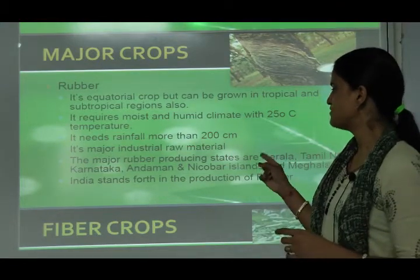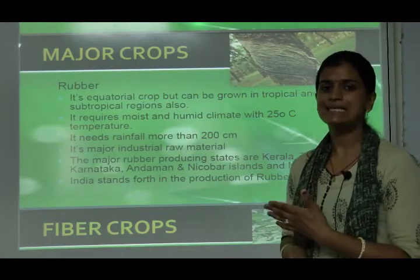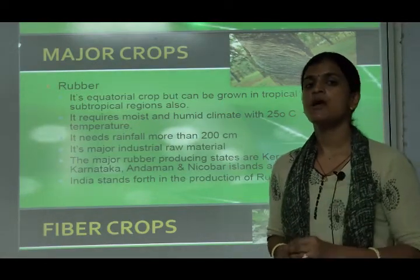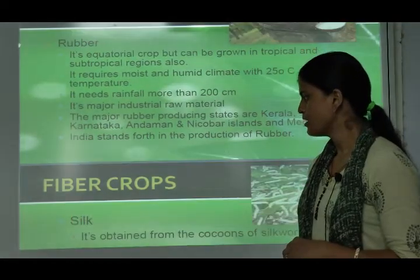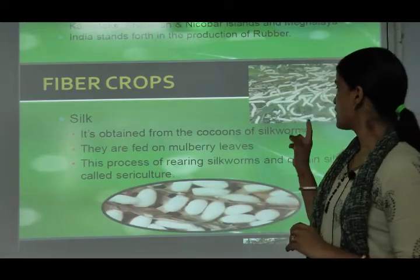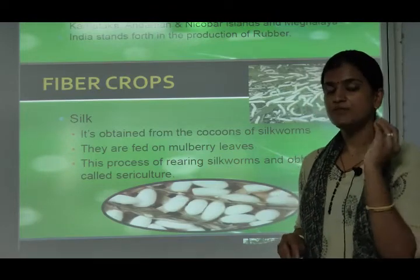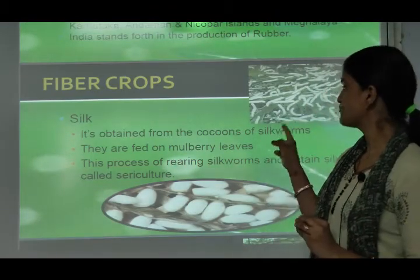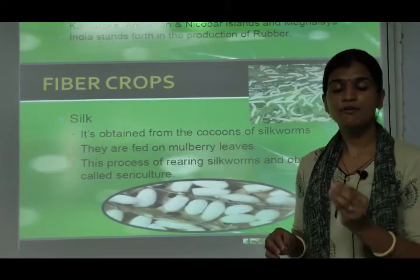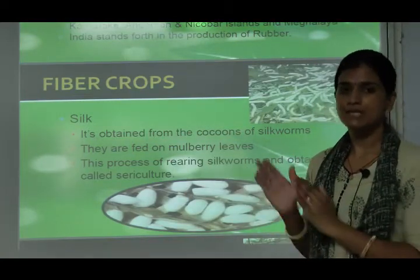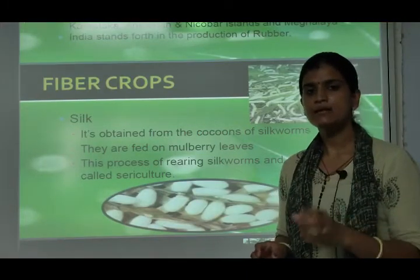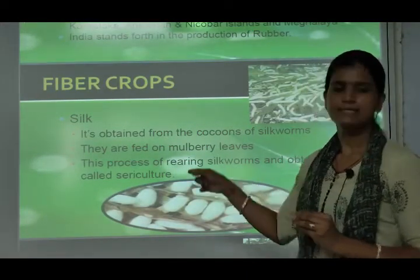The major rubber-producing states are Kerala, Tamil Nadu, Karnataka, Andaman and Nicobar Islands, and Meghalaya. India stands fourth in the production of rubber. Under fiber crops, silk is obtained from the cocoons of silkworms, which are fed on mulberry trees. The process of rearing silkworms to obtain silk is called sericulture.